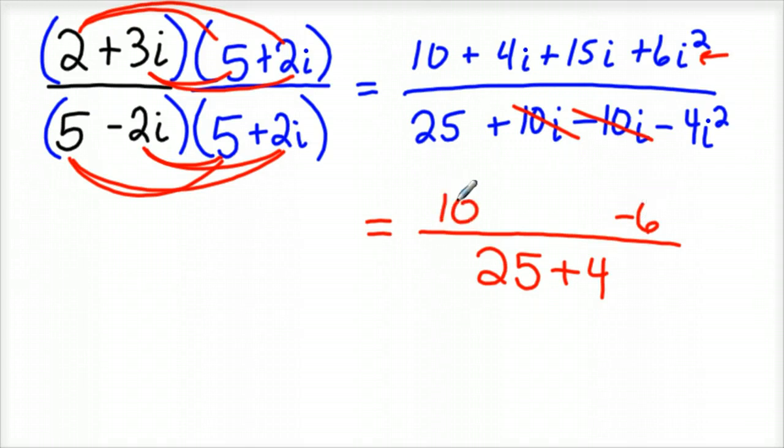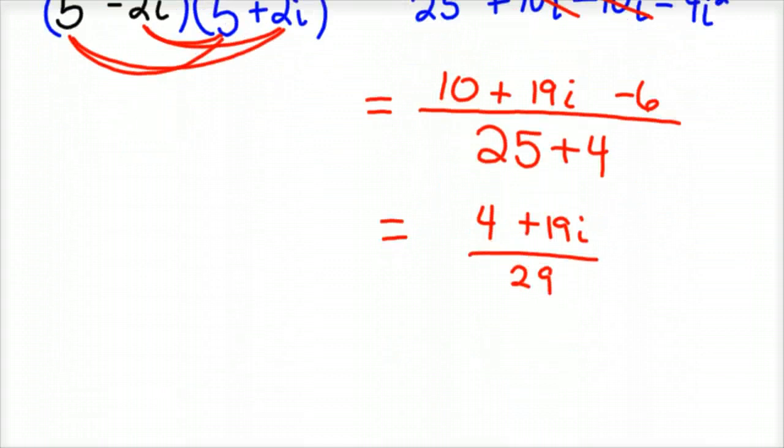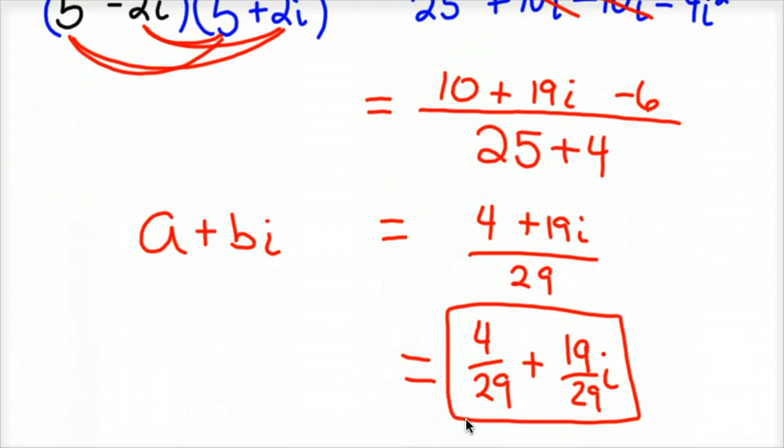Pardon me. You've got 10 plus 19i, if you combine these two i's, minus 6. So one last step to combine your real numbers. 10 minus 6 is 4 plus 19i. Divided by 25 plus 4 is 29. And for the most part, we're done. We always want to write this in complex form, though. Complex number is always written in this form, A plus Bi. So one last step, this would be, in complex form, 4 29ths plus 19 29ths i. And so there's how you would divide complex numbers to end up with another complex number. So that one's kind of a tricky one.